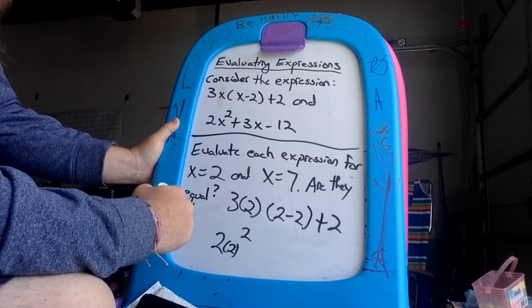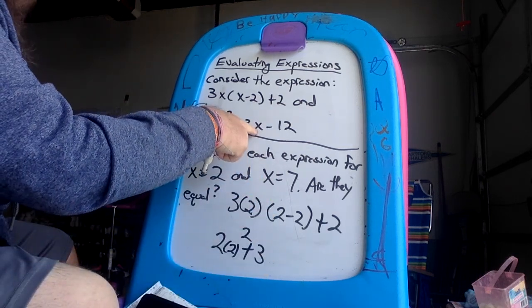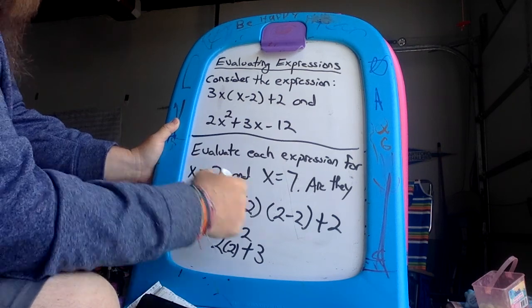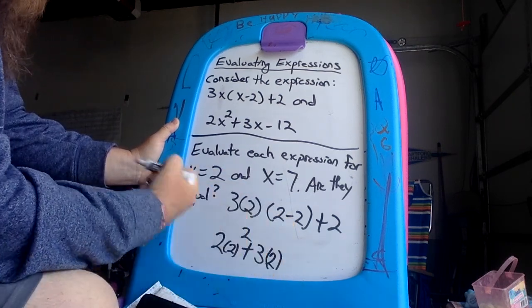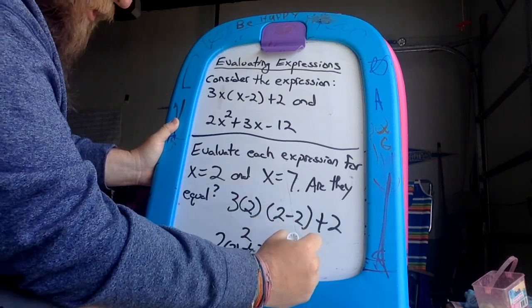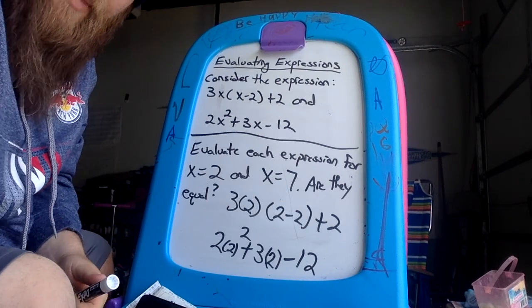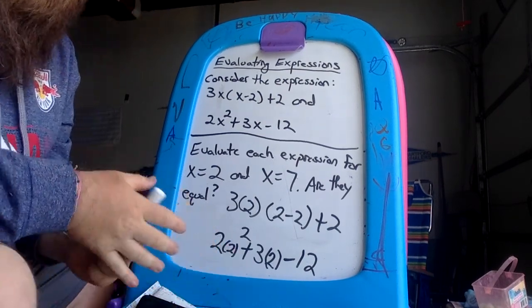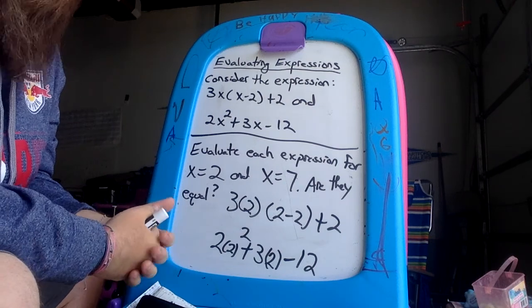Parentheses 2 squared plus 3, we have to find the unknown number and in this case we're sticking with the same number which is 2. Make sure you close parentheses because if not it looks like 32 minus 12.